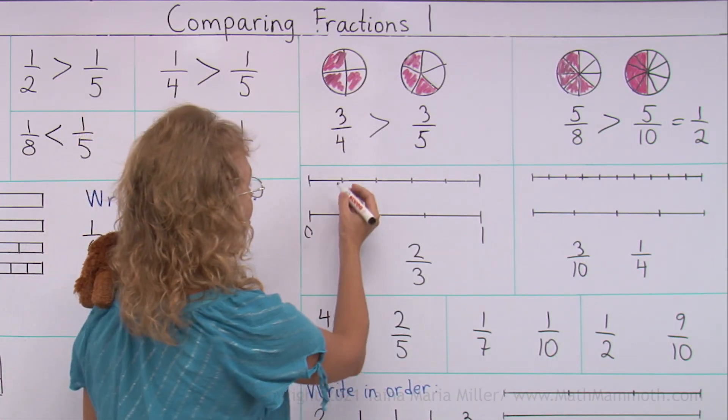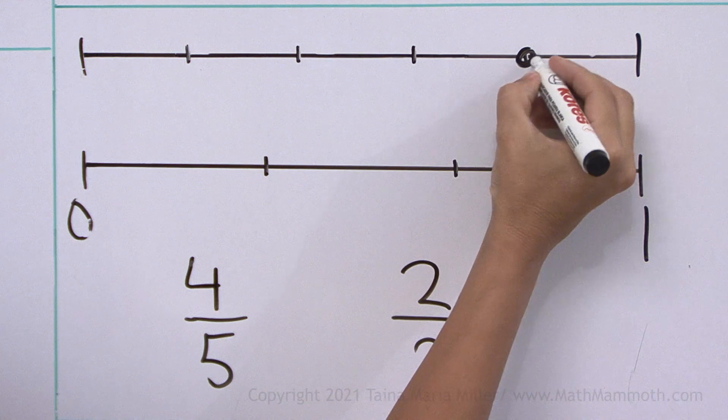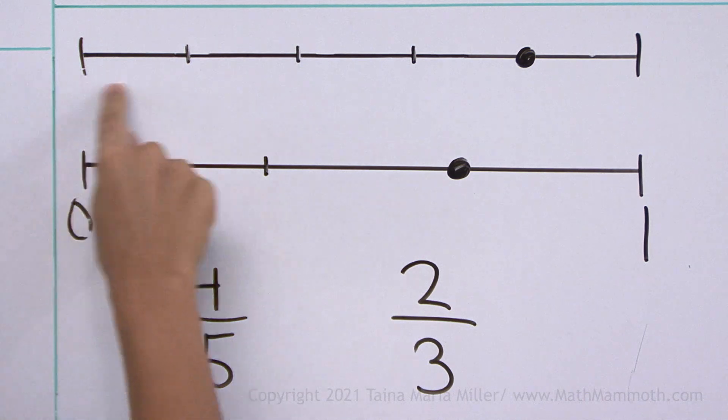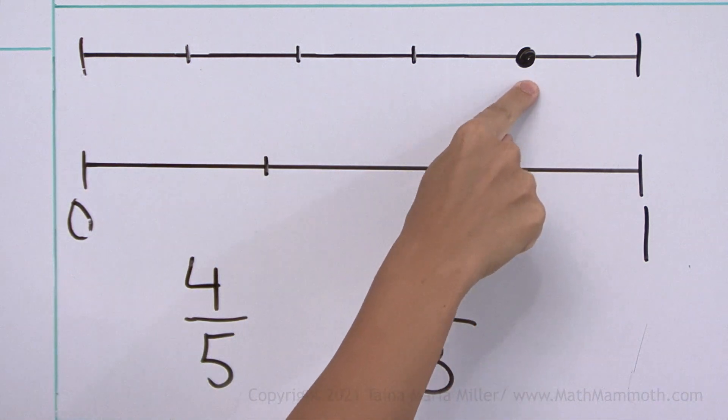Now we will mark those fractions: four-fifths over here, two-thirds over here. Can you see which one is more? Which one is the greater fraction? This one is, because it is further from zero.